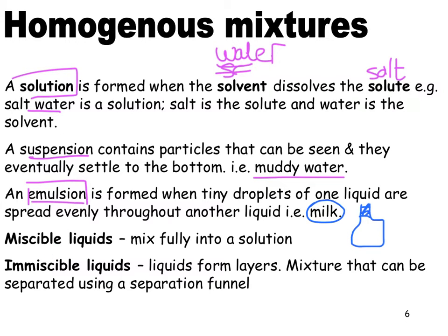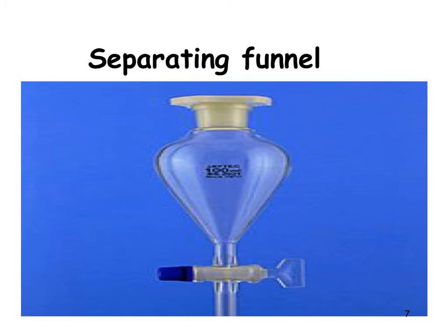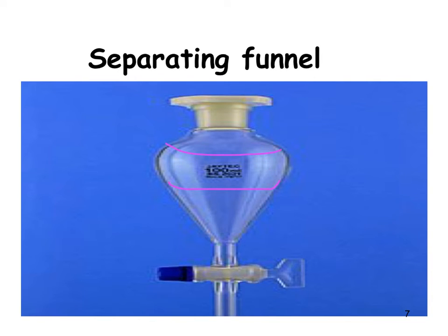Miscible liquids will mix fully; immiscible liquids form layers like oil and water. In order to separate immiscible liquids, we can use something called a separating funnel. You pour the two immiscible liquids in, they form layers with a meniscus on each, and then using the tap you can tap off the first layer and collect what's in the second layer separately — for example, separating oil from water.